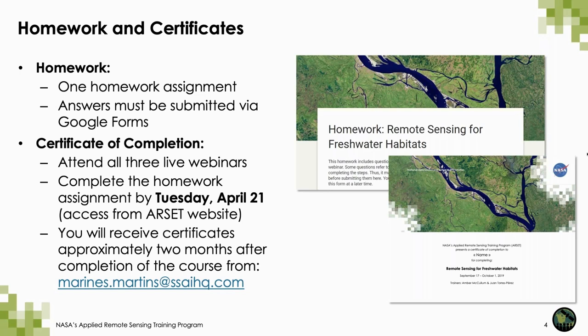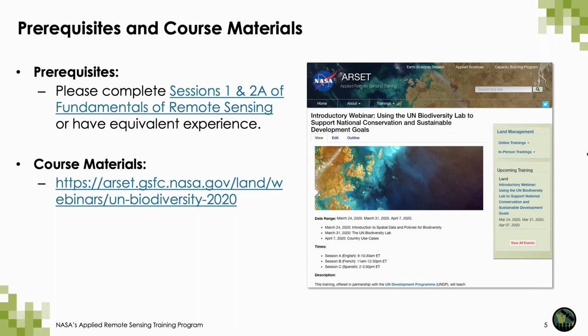To receive a certificate of completion, you must attend all three live webinars and complete the homework. It takes some time to process these certificates, so you can expect to receive them about two months after the completion of this course. The only core course prerequisite is the fundamentals of remote sensing, or have the equivalent knowledge. You can find all the course materials on the website shown here, including a PDF of the presentation in all three languages, a link to view the recording of each week's webinar on our YouTube channel, and a link to the Google Form for the homework submission available on April 7th.